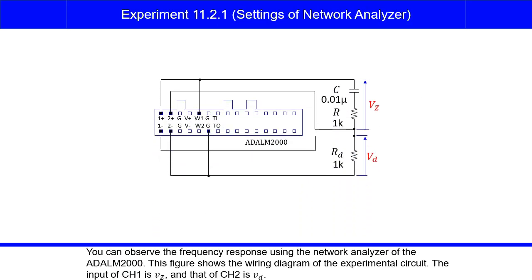You can observe the frequency response using the network analyzer of the ADALM2000. This figure shows the wiring diagram of the experimental circuit. The input of channel 1 is VZ, and that of channel 2 is VD.